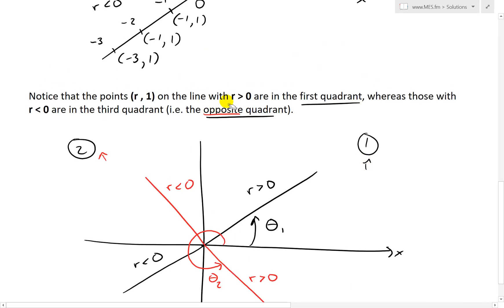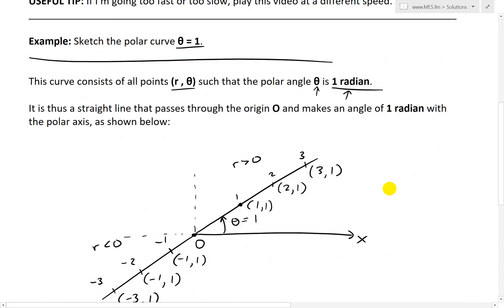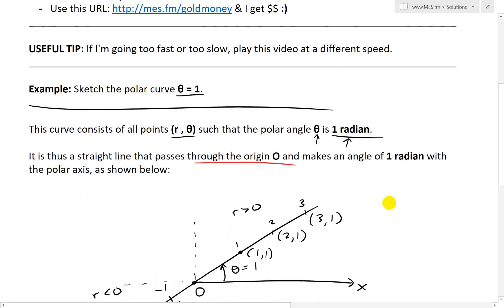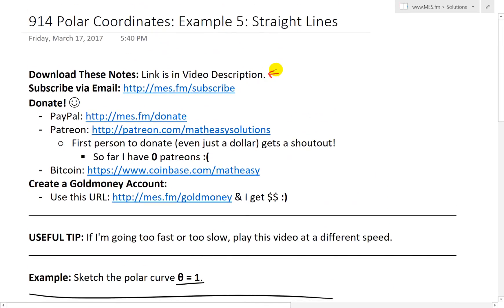So anyways, that is all for today. Hopefully, you'll learn from this. Quick example, just to show you, you can draw straight lines through the origin using polar angles, and that's just writing the angle as a constant. Anyways, thanks for watching. Like always, you can download these exact notes in the link below. And stay tuned for another math easy solution.